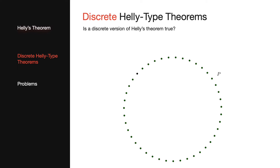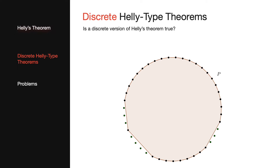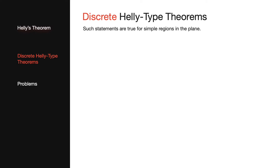To see this, consider a set P of n points in convex position. Let our collection of convex sets consist of the convex hulls of every subset of P of size greater than n minus n over k. Then the total size, in terms of the number of points of P contained, of any subset of k convex sets is more than k minus 1 into n, and therefore they must have a common point in P. On the other hand, no subset of P of size less than n over k can hit all the convex sets.